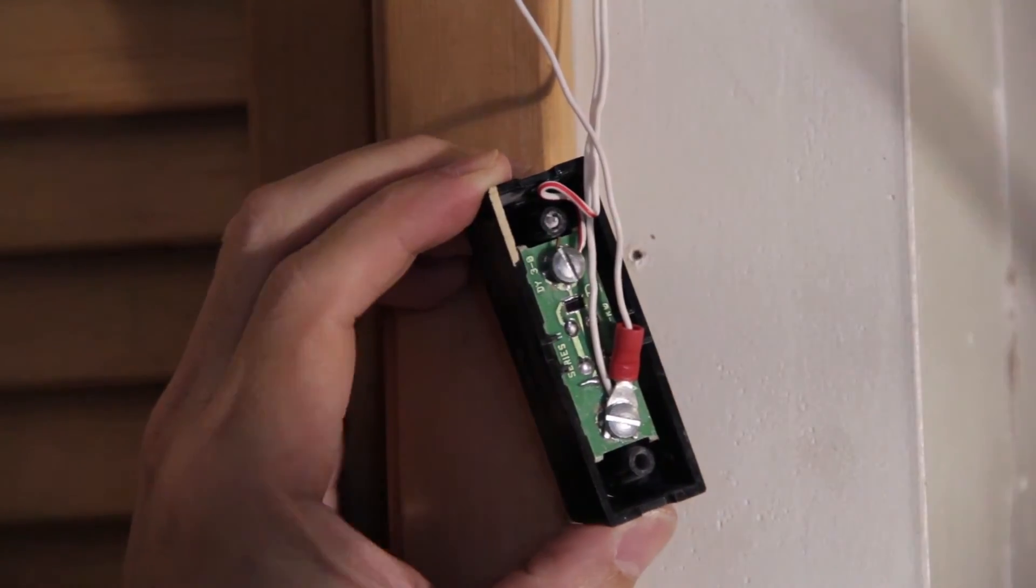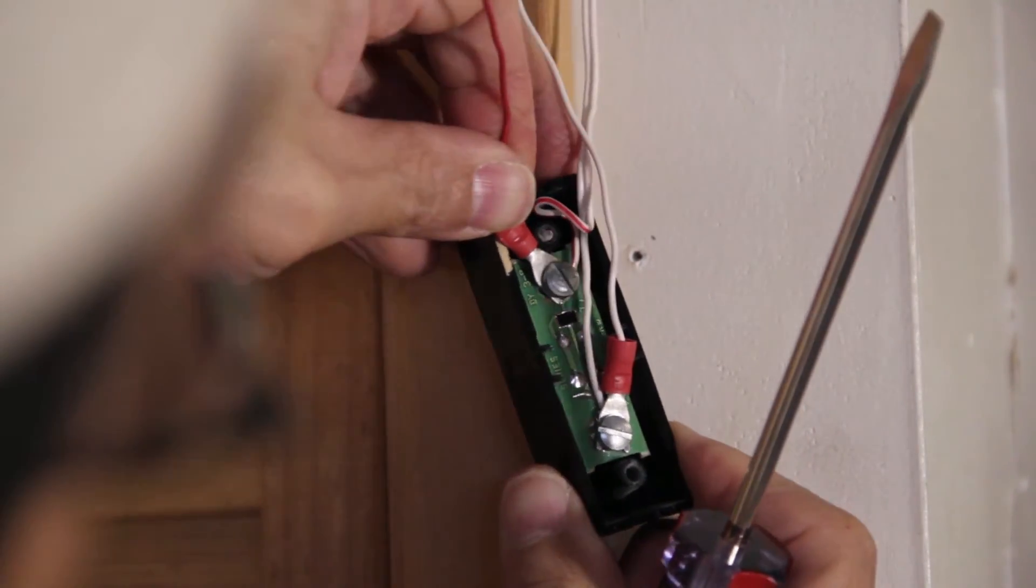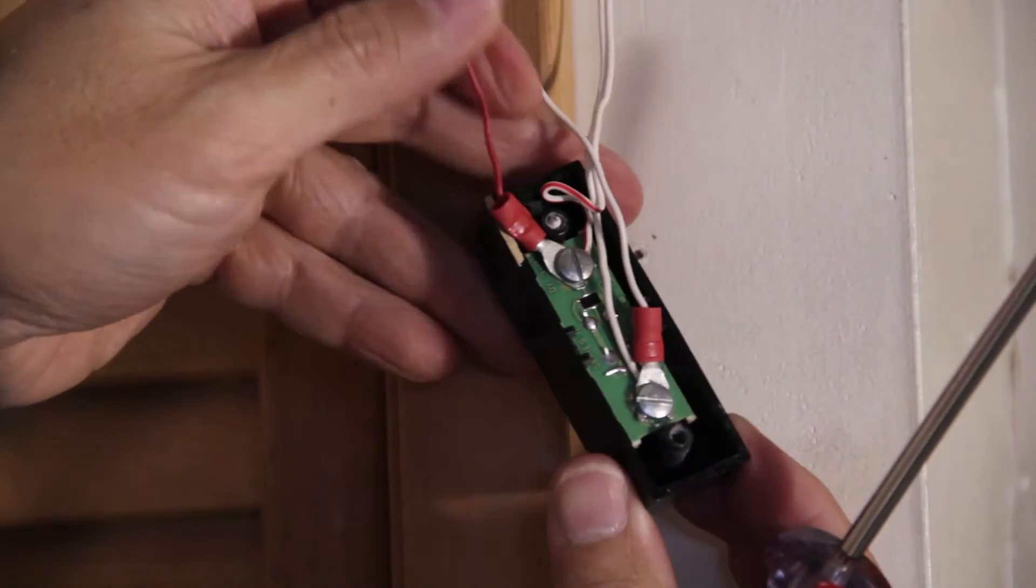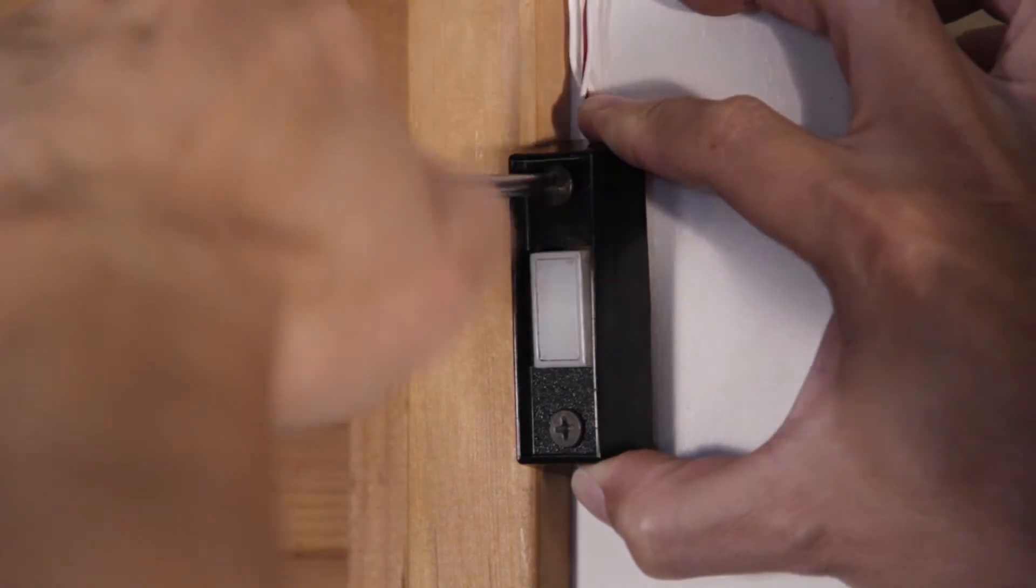Do the same thing for the second terminal. Loosen the terminal, fit the spade connector underneath, and re-tighten. Finally, re-attach the garage switch to your wall.